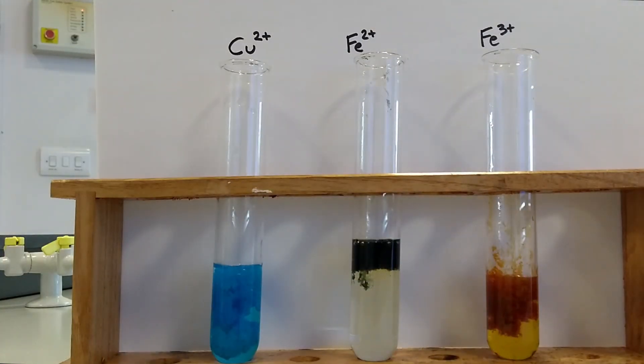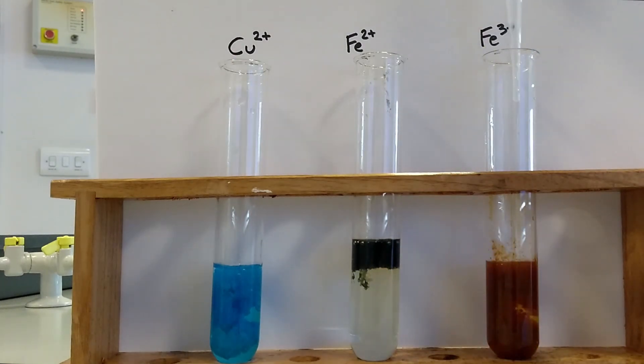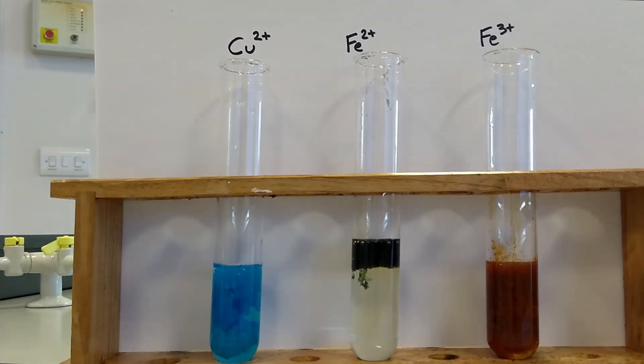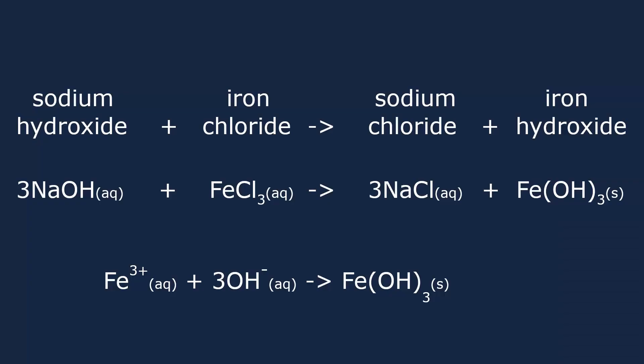The orange-brown precipitate forms due to the reaction between the aqueous Fe³⁺ and 3 hydroxide ions to form the insoluble solid iron(III) hydroxide.